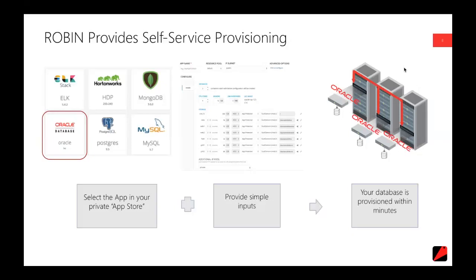Behind each application — Oracle, ELK, Hortonworks, whatever — there's what we call a bundle. That bundle is comprised of a manifest file, the YAML file used to render this dialogue on screen. It defaults pretty much all of these values, but through the provisioning workflow you can easily tweak them — change sizing, number of compute cores, memory, etc. You can also specify anything particularly relevant to this application. In this case it's RAC, so you have provision for specifying both the public and private IP address, the SCAN name, and other things unique to this application.